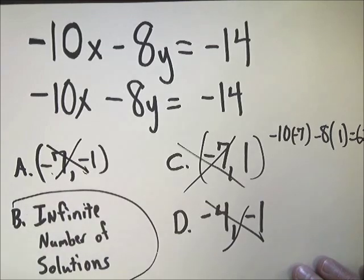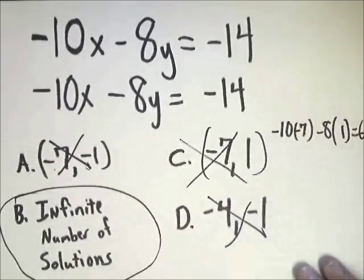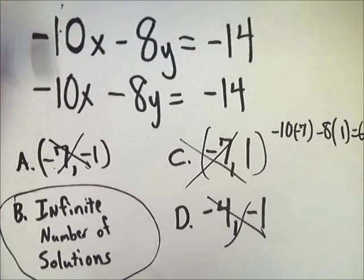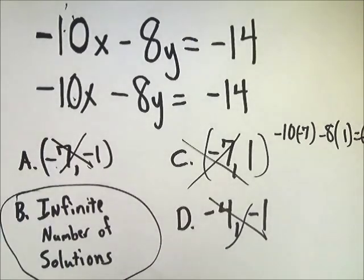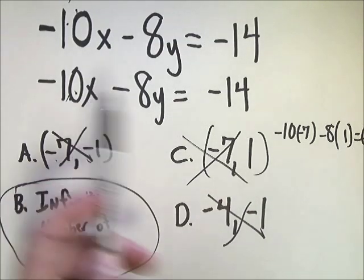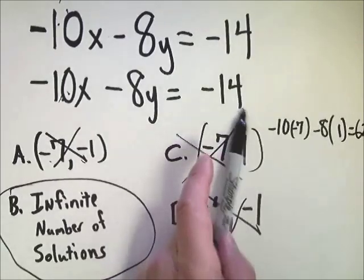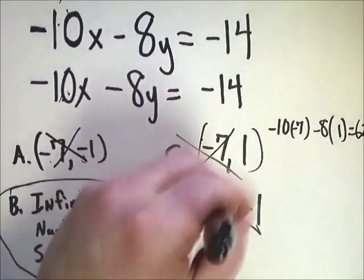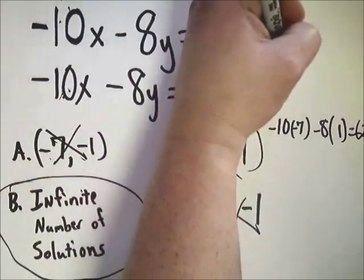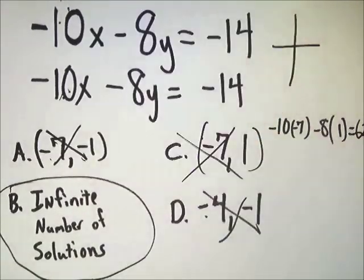So my only choice would be infinite number of solutions. Now let's think of the possibility of that answer. I could have gotten that without doing anything. Look at the two forms. They're exactly the same. This says exactly the same thing as this. So no matter what you plug in for x, you're going to get a y that's going to make this work.